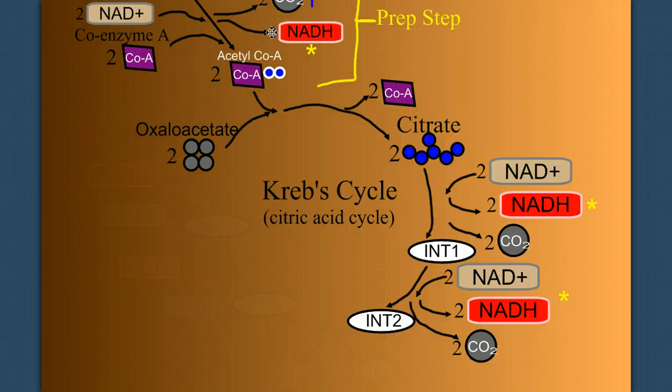Now, we need to double the numbers here for our intermediates because we have two of everything, so I'm going to grab a pen. I should have a two in front of that, and a two in front of this.